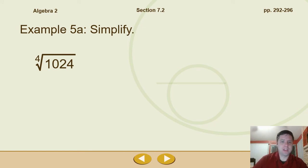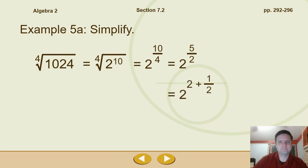Example 5a has a simplification of the 4th root of 1024. You can see that 1024 is actually 2 to the 10th power, which we can rewrite as 2 to the 10 divided by 4. And we can ask, how many times does 4 go into 10? Well, we can reduce this to 2 to the 5 over 2. Or just knowing that that is 2 and 1/2. That's the same thing as saying 2 squared times 2 to the 1/2, or 4 times the square root of 2.